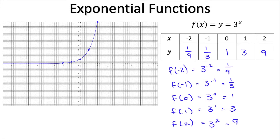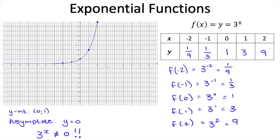Let's look at the characteristics of this graph. We can see there's a y-intercept at (0, 1). Something important to note is that 3 to the power of x could never equal 0 — there's no possible number you could plug in for x to make that happen. That means there is an asymptote at play, and that asymptote is y equals 0, which is also the x-axis. Exponential functions have one horizontal asymptote.